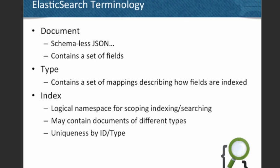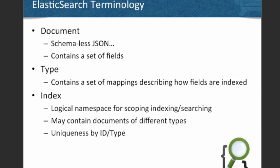Elasticsearch has a concept of a type, which is really a particular set of mappings describing what you want to do with those fields. Within your Couchbase bucket, you might be storing different types of documents — maybe you have users, maybe you have products. From Elasticsearch, you're actually able to tell that these two different documents are different types and index them differently. Finally, there's a concept of an index, which you can think of as mapping to a Couchbase bucket — a logical namespace where you scope all your indexing and searching. It's important to note that in Elasticsearch, two documents can have the same ID as long as they're of different types, which is different from Couchbase.